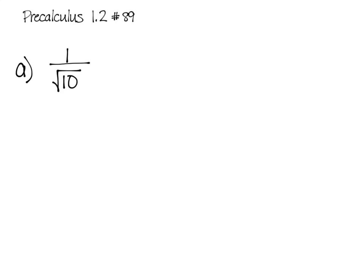Pre-Calculus, Chapter 1, Section 2, Problem Number 89. It's A, B, and C, and all three of these we are trying to rationalize the denominator.